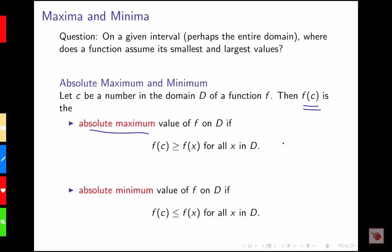So this makes sense. We've got something like this here, where this is my c, so that f of c is greater than the values of the function for all x over our domain. We can also have something like this where maybe it's one of the endpoints, where this point here would be my c, and it would be greater than everything else in my domain.